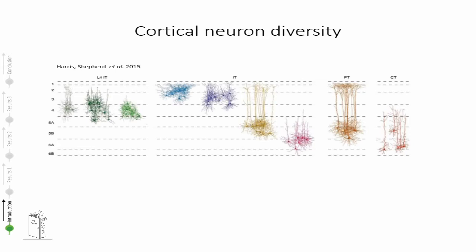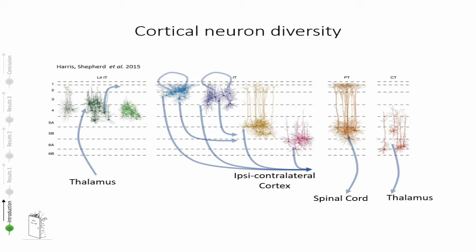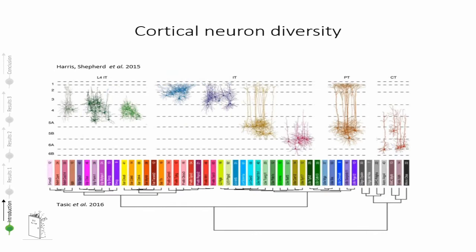Whether we look at the most rostral part of the cortex or the most caudal one, we always find a similar organization into six layers. Each of these layers contains a specific group or groups of neurons that share similar functions and connectivity. Classically these neurons have been described because of their typical pattern of connectivity, morphology or electrophysiological properties. And more recently, thanks to advances in techniques such as single-cell sequencing, we have been able to access also the molecular variability that each of these types of neurons has.